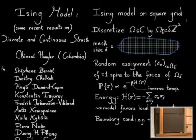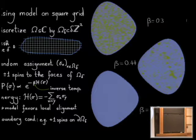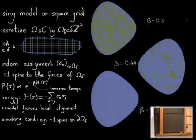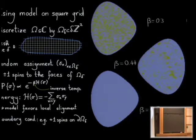In statistical mechanics, the question is what happens as the system gets large — in other words, what happens as the mesh size goes to zero. Here are simulations of the Ising model with various values of beta. For beta small, you see a disordered picture: the plus spins are drawn in blue and the minus spins in green, and what you see is a noisy picture that looks really disordered at large scale. While for beta large, you see a long-range ferromagnetic order arise.